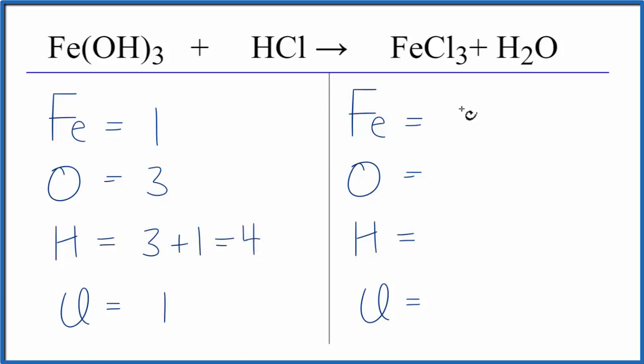Over on the product side we have one iron, one oxygen, two hydrogens, and then the three chlorine atoms.